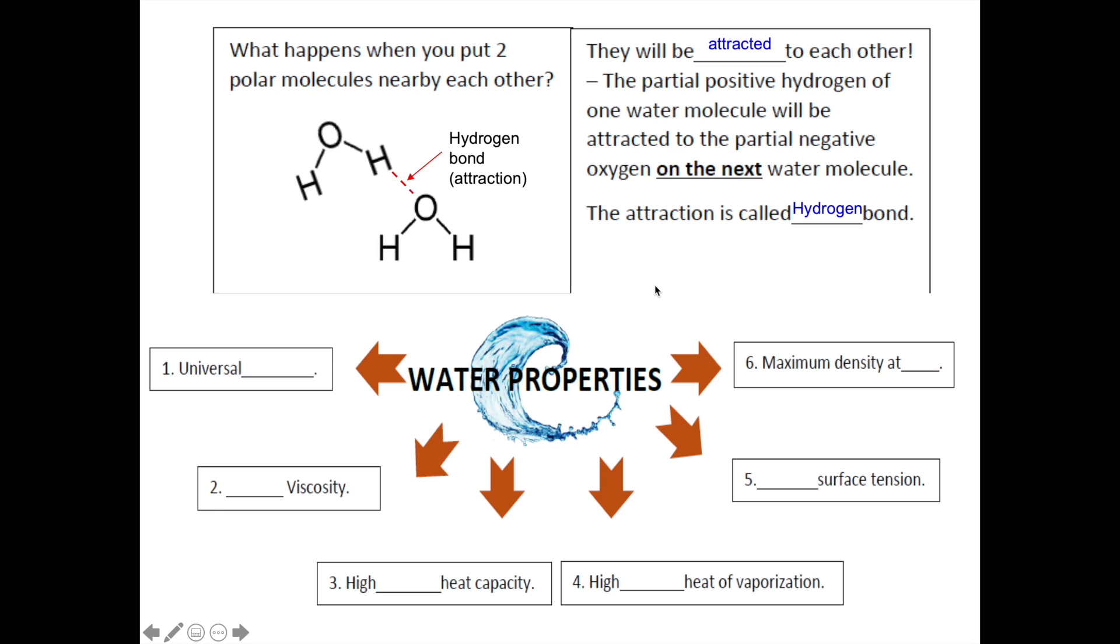If the two molecules are separated far apart, the hydrogen bond will be broken. All the water properties arise because of the fact that water is a polar molecule and its ability to form hydrogen bonding.